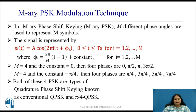We know that in M-ary Phase Shift Keying, that is M-ary PSK, M different phase angles are used to represent M symbols. This signal is represented by Si(t) = A cos(2π fc·t + φi), present for one symbol duration, for i = 1 to M, and φi = (2π/M)·(i − 1) + constant, for i = 1 to M.